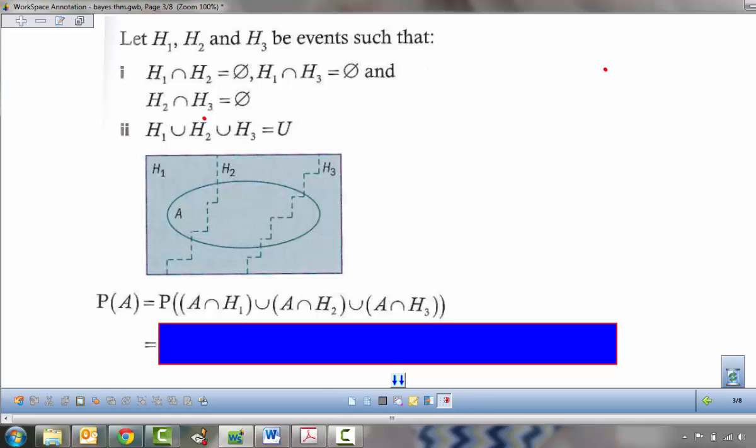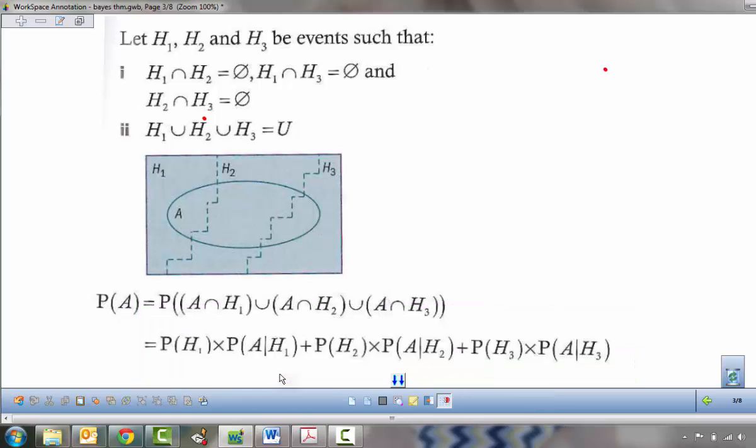Now, Bayes' theorem and this total probability can be extended to many more hypotheses. We'll look at three hypotheses, so our universal set is split into three separate regions, hypothesis 1, 2, and 3, and the probability of A occurs sometimes when h1 is happening, sometimes when h2 happens, and sometimes when h3 happens. So h1, h2, and h3 are all disjoint, and their union is the universal set. So the probability of A occurring can be given with this set notation, or using our conditional probability formula, we have this.